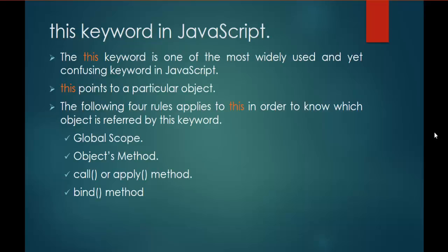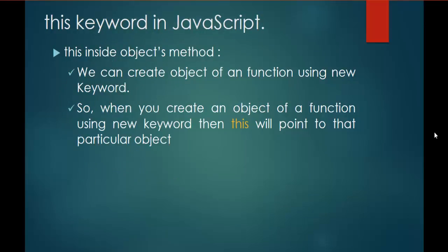In the last session, we learned about this keyword and also we learned one of the rules which applies to this keyword, that is Global Scope. And right now, we are going to learn about the second rule, that is Objects Method. Here comes that slide. Let me read out the sentence there: this inside Objects Method. So, this is what we are going to learn — how Objects Method is related with this keyword.